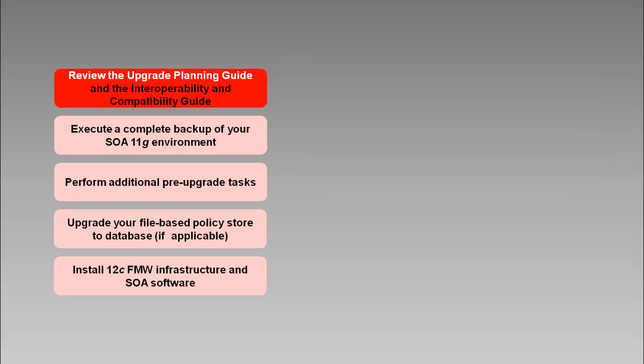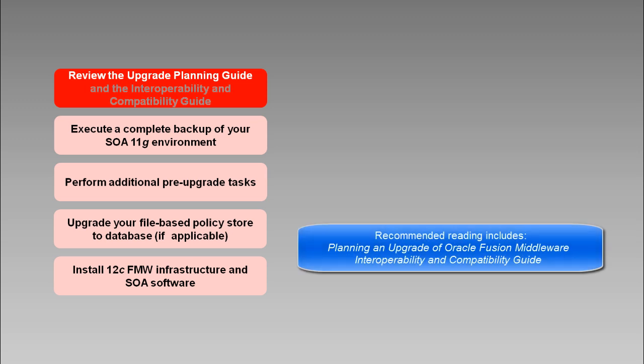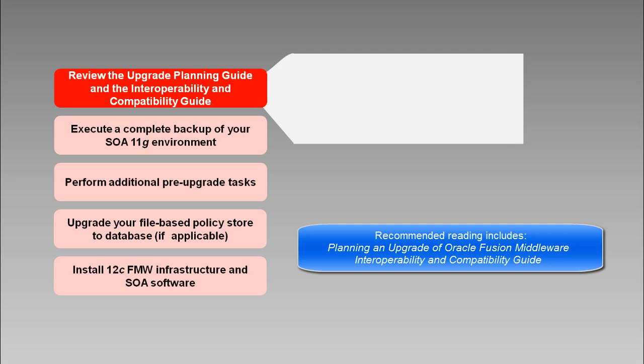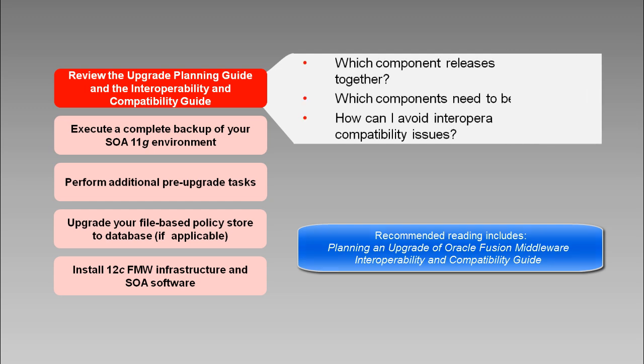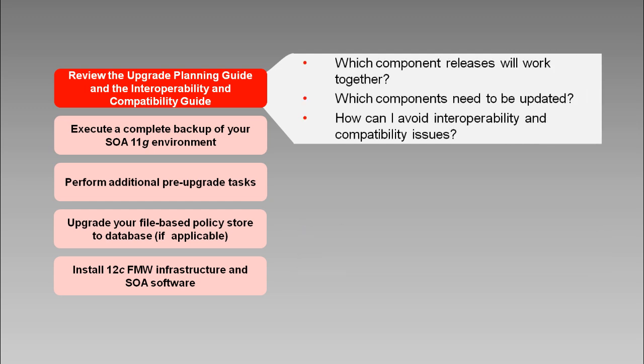As its name suggests, the Interoperability and Compatibility Guide helps you to determine whether various Oracle Fusion Middleware components of different versions or releases will work together in a supported configuration. For example, certain components in your environment may need to be updated before you upgrade to SOA Suite 12C. This document will guide you through the process of identifying relevant components, determining version information, and avoiding specific interoperability and compatibility issues.